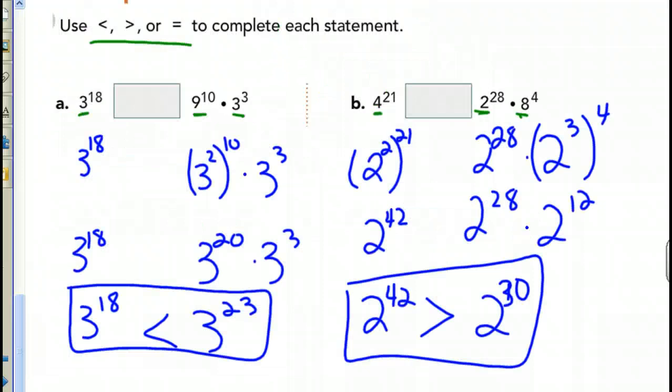All right. So, you should have gotten over here 3 to the 18th is less than 3 to the 23rd. Over here you should have gotten 2 to the 42nd power. It's greater than 2 to the 30th power. So, if you need to know the work there, there it is.